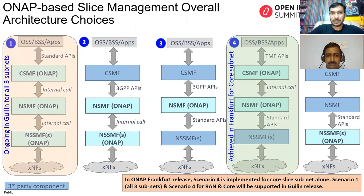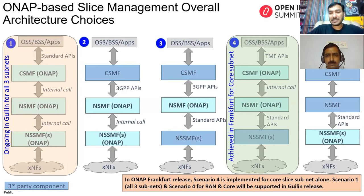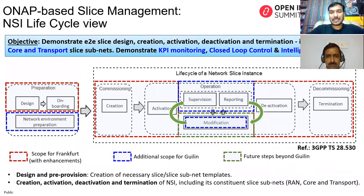The Guilin release, coming in November 2020, enhances this further — also taking care of the core, transport, and RAN parts of slice management NSMF within ONAP, along with CSMF and NSMF. We still maintain backward compatibility, preserving interaction with external NSMF entities.